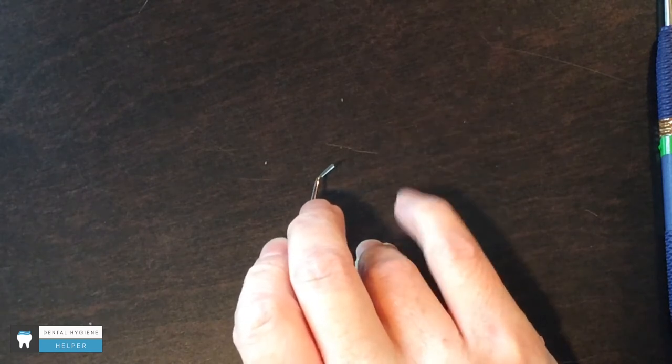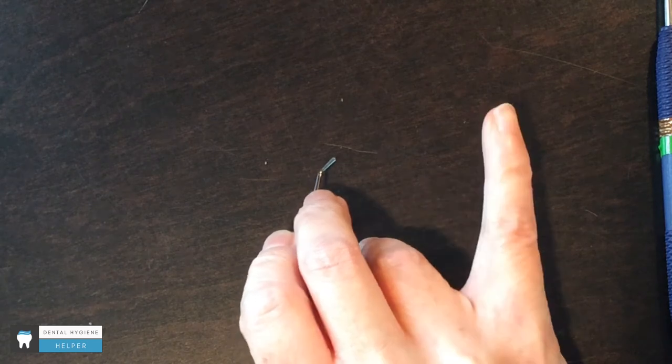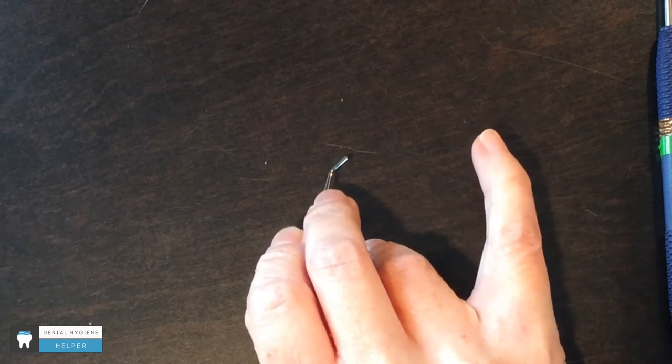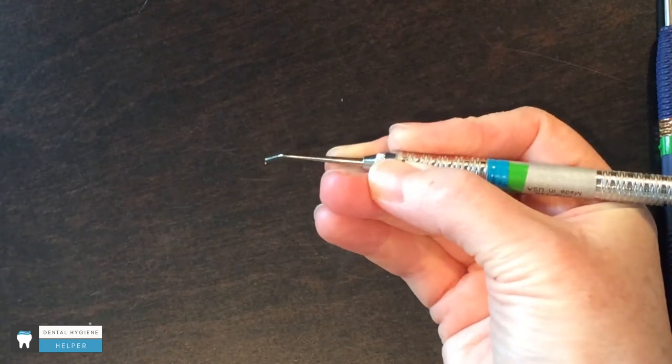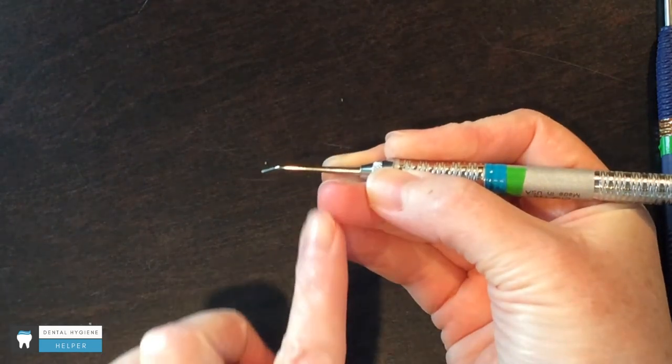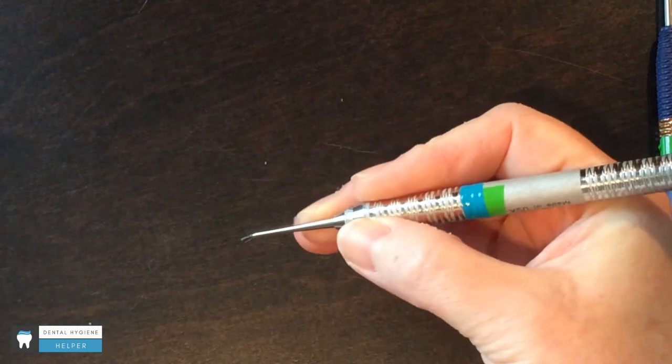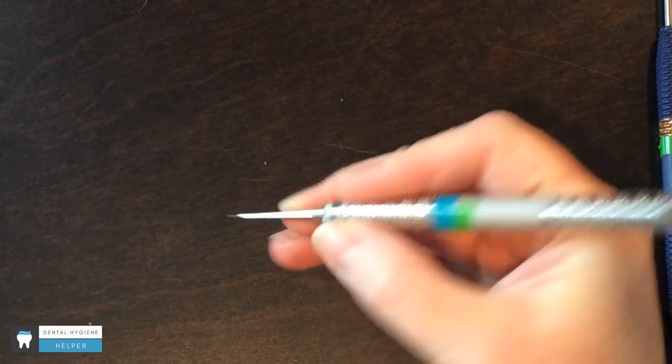My pinky doesn't really have a job to do, so it can just stay in a relaxed position nearby. You don't want to extend it out like you're drinking tea with the queen, but it also doesn't need to be choked right up next to the ring finger. Just hanging out relaxed nearby.